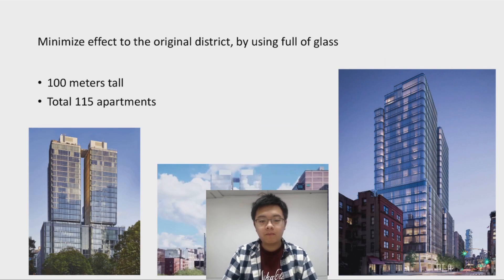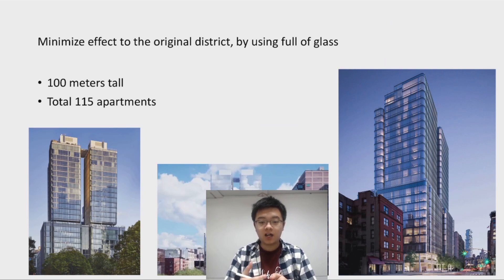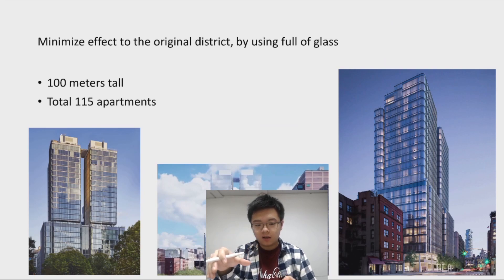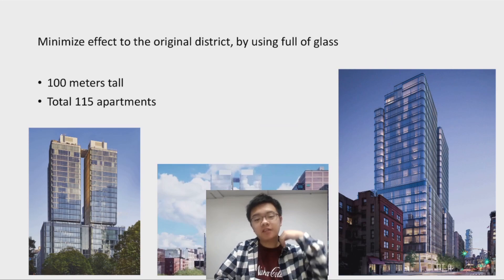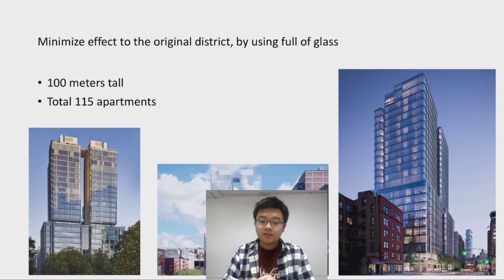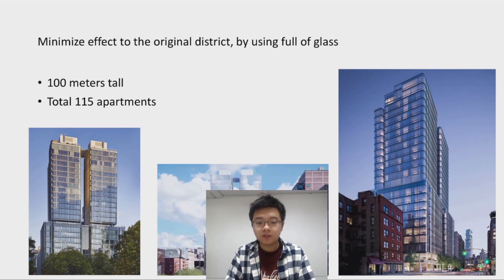Let's start with one of the massing features that Renzo Piano has used: he uses full glass to form the facade of the whole building. There are lots of advantages to that. First, since the surrounding buildings are short, a tall building in the district could actually disturb or sabotage the feelings of the site because the contrast is really obvious. But if Renzo Piano uses this kind of glass facade, it can minimize the effect on the original district.